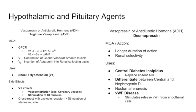We can also use desmopressin for nocturnal enuresis in young children who have problems wetting the bed. The other key testing point: we can use it in von Willebrand disease — the bleeding disorder caused by lack of von Willebrand factor — because desmopressin causes von Willebrand factor to be released from endothelial cells. This is a very important, high-yield fact that appears in pathoma and everywhere. Desmopressin is a treatment for von Willebrand disease.